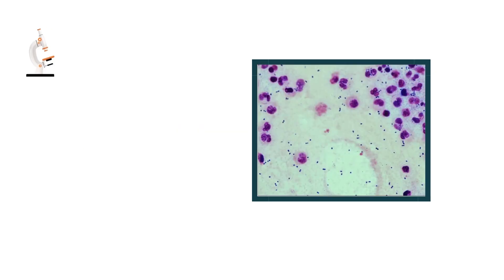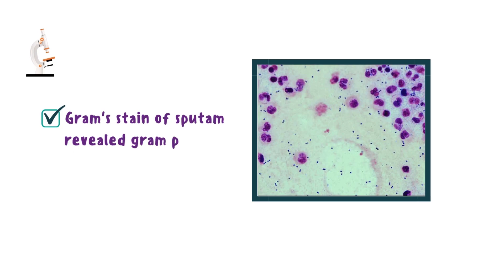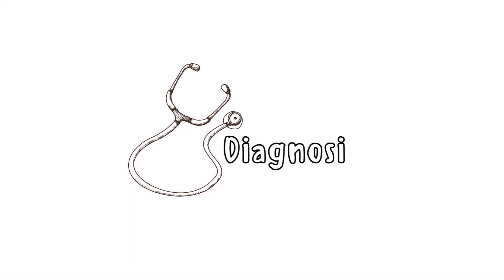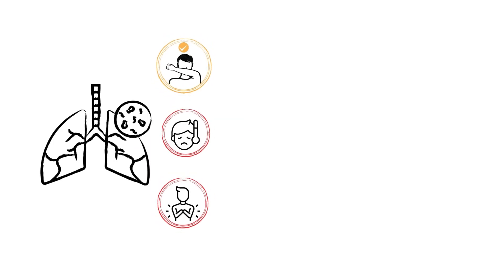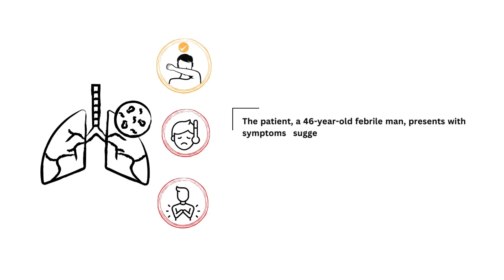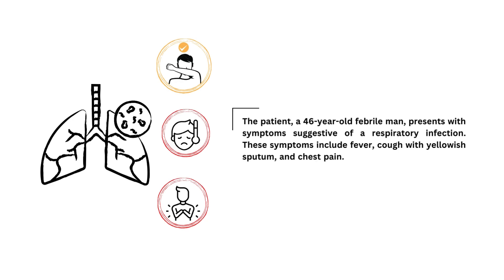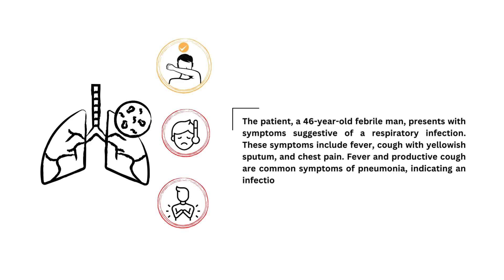Furthermore, the gram stain of his sputum revealed the presence of gram-positive diplococci. Let's delve deeper into the diagnosis. A 46-year-old febrile man presents with symptoms suggestive of a respiratory infection, including fever, cough with yellowish sputum, and chest pain.